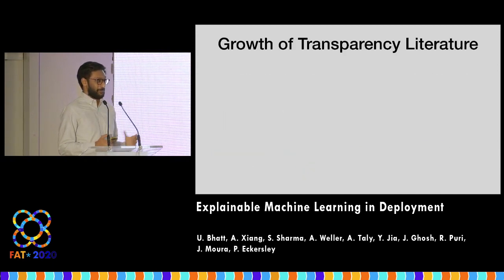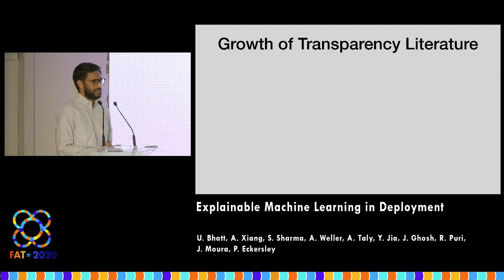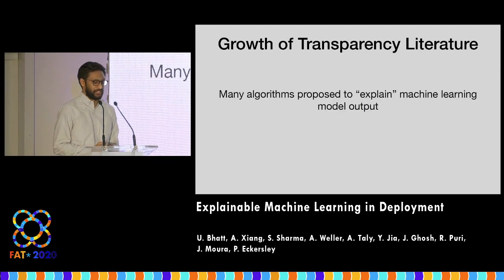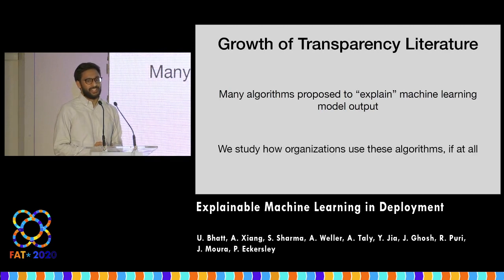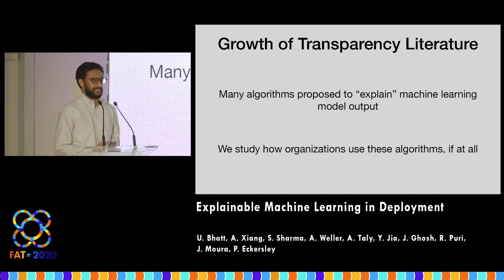In the last couple of years, we've seen a growth in the transparency literature. In particular, there are a lot of algorithms that claim they can explain machine learning model outputs. Our goal was to study: are people actually using these algorithms? And if so, how are they using them, and who are they using them for?